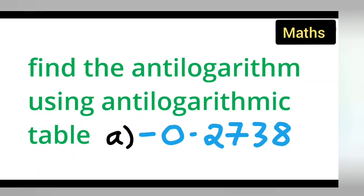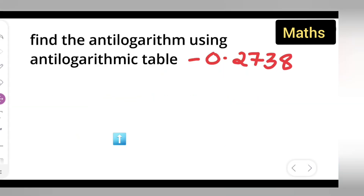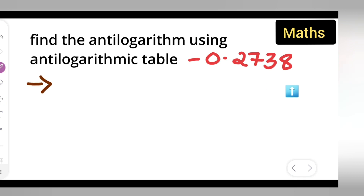Welcome to today's class of mathematics. Today's question is taken from class 9th mathematics, logarithmic chapter. The question is: find the anti-logarithm using the anti-logarithmic table of a negative number, that is minus 0.2738. First, write down the question.